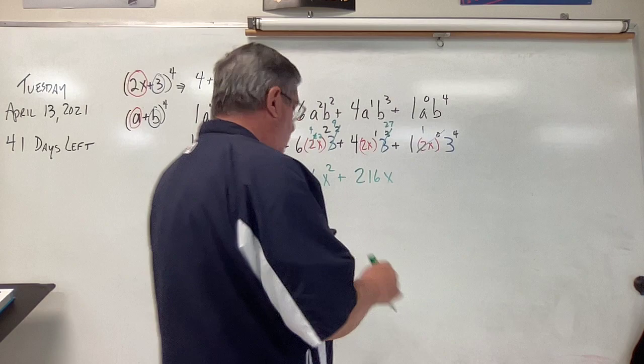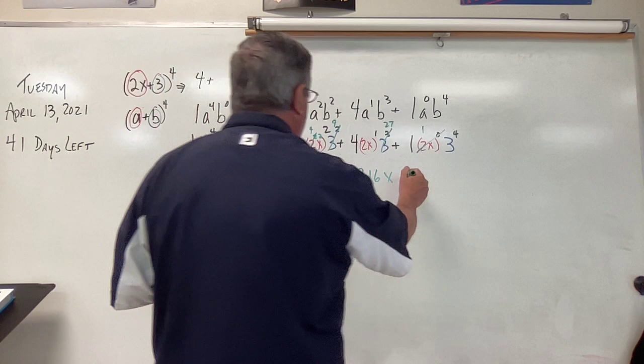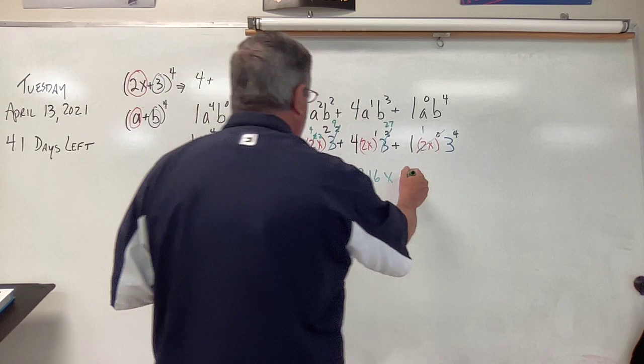Again this just becomes one, so one times one times three to the fourth and we get plus 81.